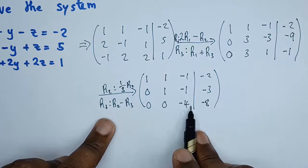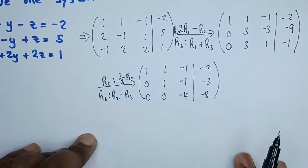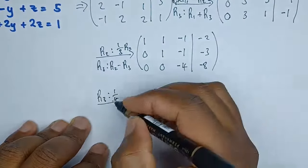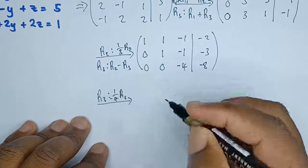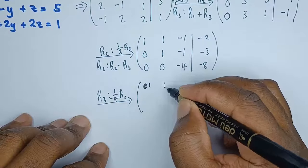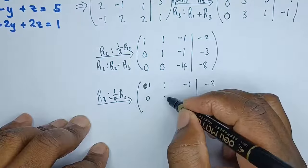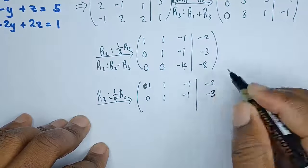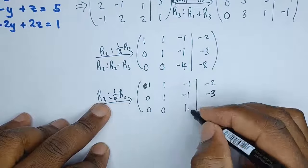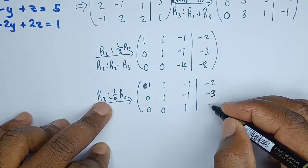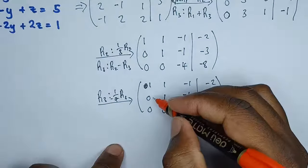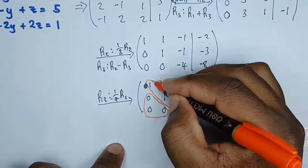We've achieved the three zeros below the diagonal. Now we need a 1 in the third diagonal position. To get a 1 there, the operation on row 3 will be to multiply everything by negative 1 over 4 (i.e., divide by negative 4). Row 1 and row 2 are maintained as they are: row 1 is 1, 1, negative 1, negative 2; row 2 is 0, 1, negative 1, negative 3. Dividing row 3 by negative 4 gives 0, 0, 1, and negative 8 divided by negative 4 equals positive 2.